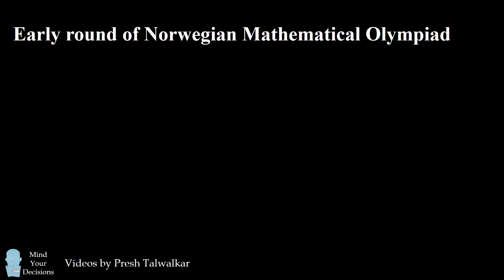Hey, this is Presh Talwalkar. This problem comes from an early round of the Norwegian Mathematical Olympiad. The numbers A, B, and C are positive integers.